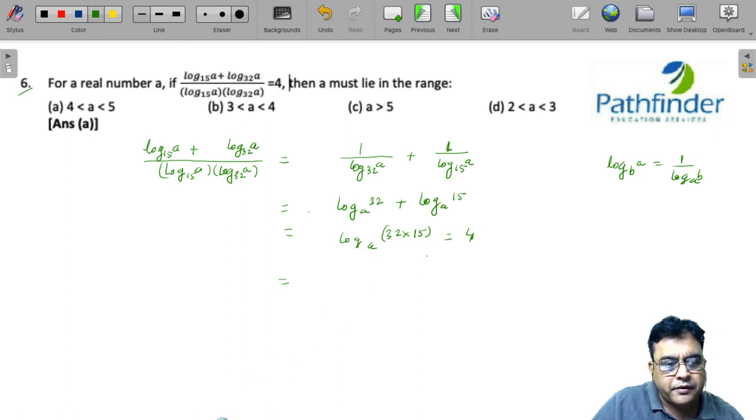a to the power of 4 must be equal to 32 into 15. So, what is this equal to? This is equal to 480. So, there must be some number to the power of 4 which gives you 480.